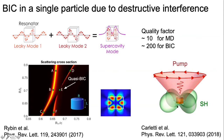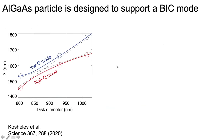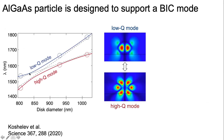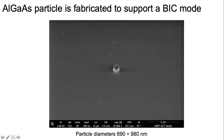We decided to experimentally realize the optical quasi-BIC mode in an aluminum gallium arsenide particle on a multilayer substrate. These particles were designed to support a low-quality and high-quality mode in phase space, and when they interfere, the quasi-BIC mode should be formed. This is an SEM image of our single particle.